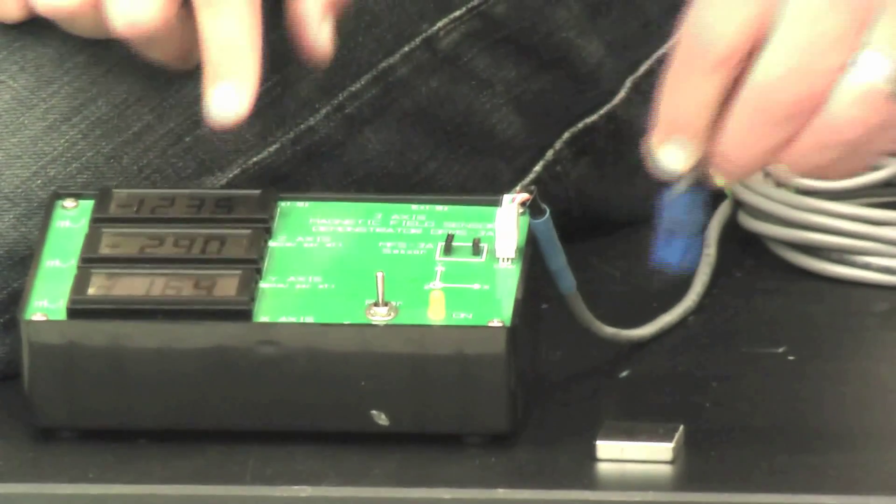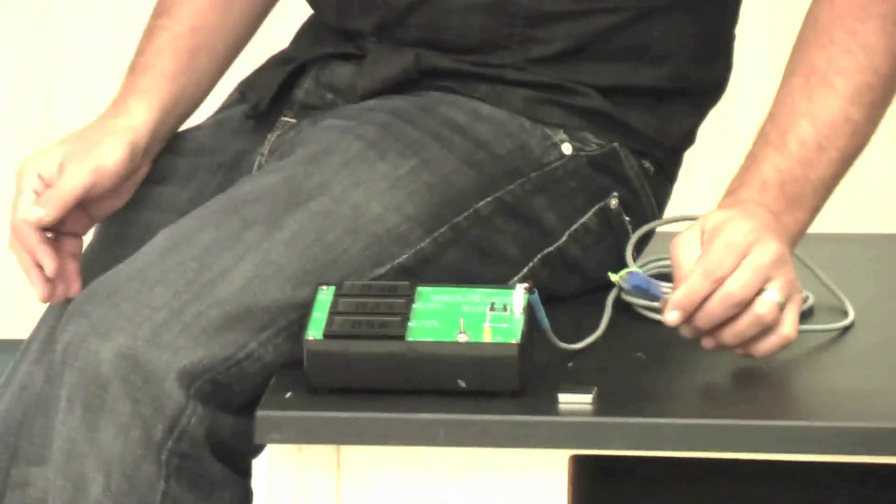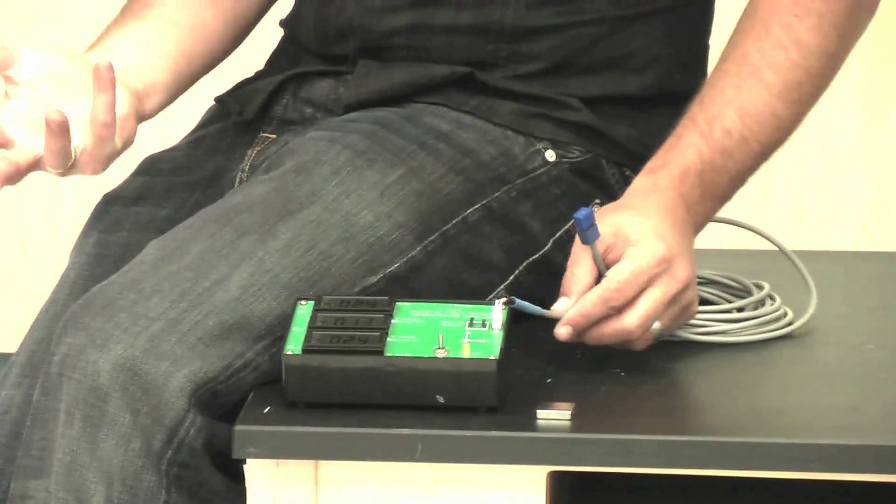This voltage is proportional to the magnetic field that's coming out of here. So this is a great way to measure how strong your magnet is.